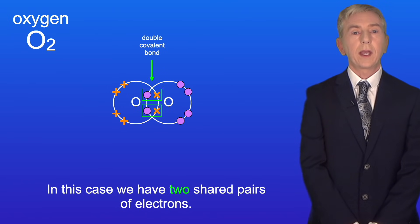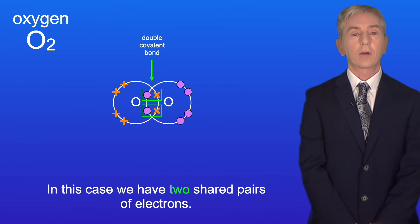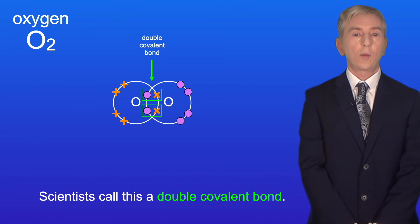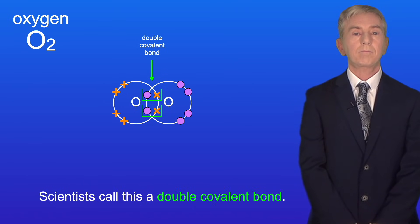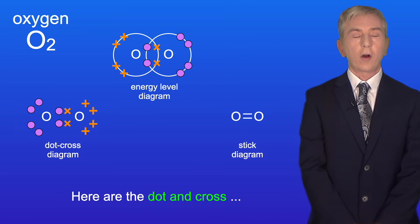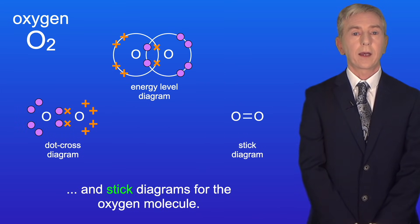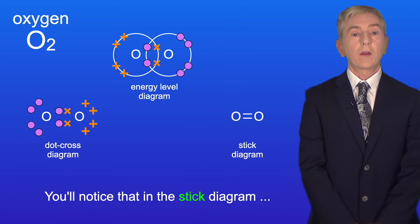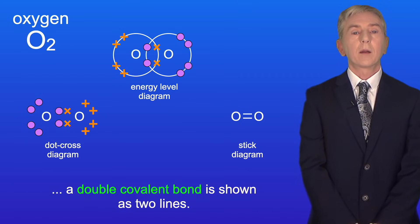In this case we have two shared pairs of electrons. Scientists call this a double covalent bond. Here are the dot and cross and stick diagrams for the oxygen molecule, and you'll notice that in the stick diagram a double covalent bond is shown as two lines.